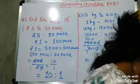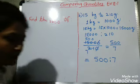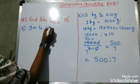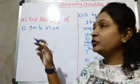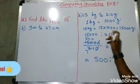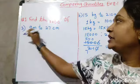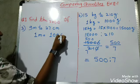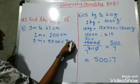Let's move to our third example: 9 meter to 27 centimeter. Always remember — when we have a bigger unit like meter or kilogram, converting to the smaller unit means we multiply. One meter is equal to 100 centimeter, so nine meter equals 9 into 100, which gives us 900 centimeter.